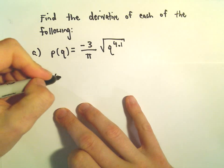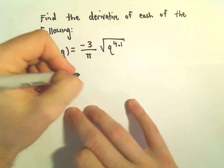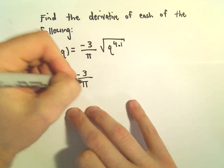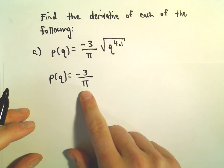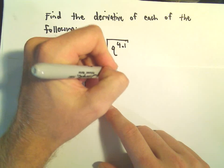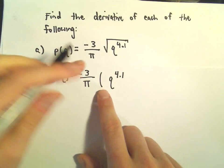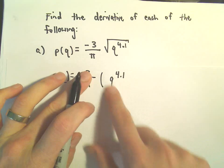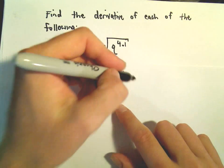So we can write this as P of Q equals negative 3 over pi. And don't be thrown off by the negative 3 over pi. That's just a constant, so nothing's really going to happen to it when we take the derivative. We can just take the derivative of the stuff involving the variable and then multiply that at the end.